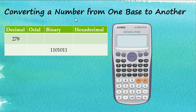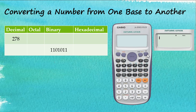We'll be converting a number from one base to another. For example, we have a number in decimal and we'd like to convert it to octal, binary, and hexadecimal. To perform calculations with different bases, we need to go to MODE and then select 4 for Base-N mode.